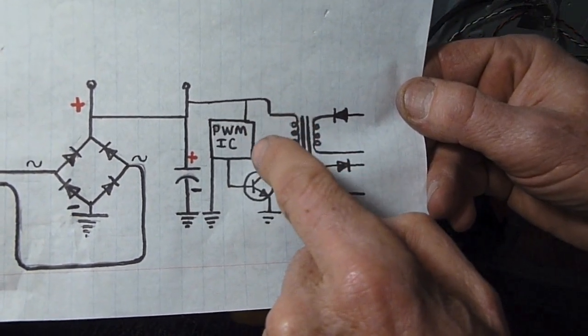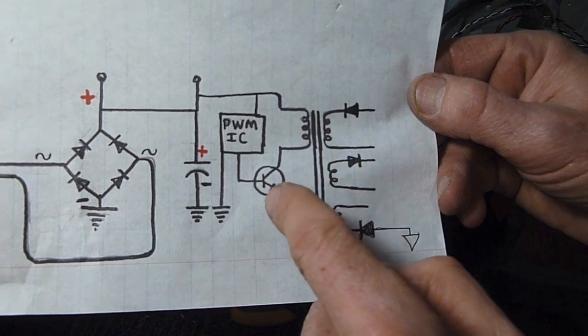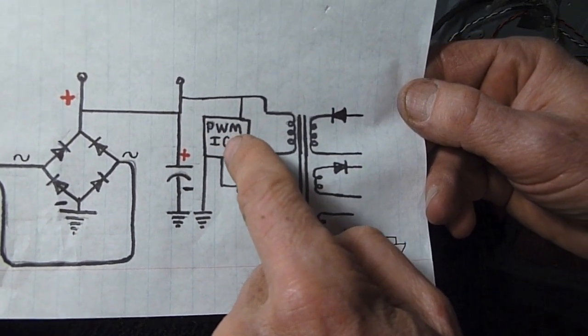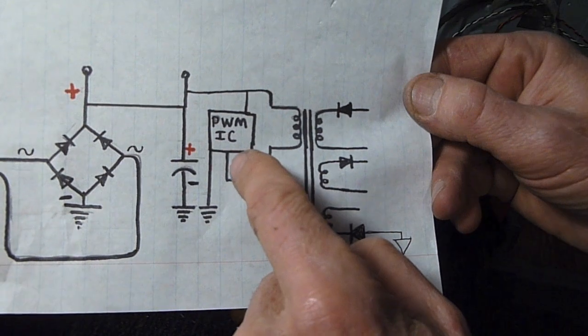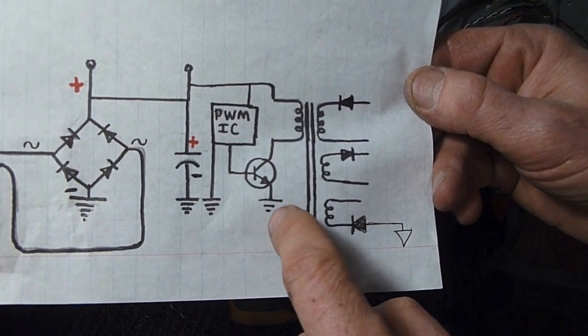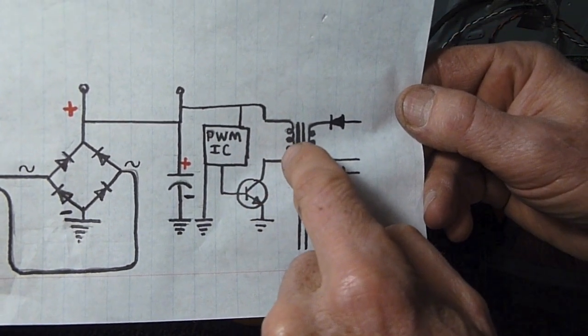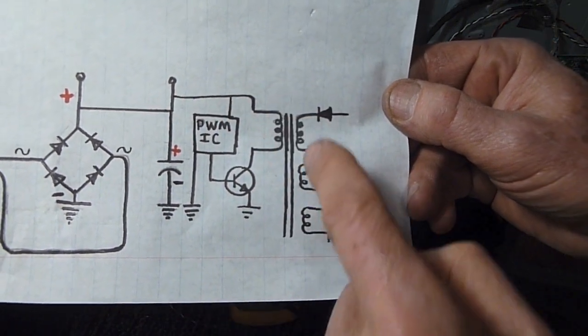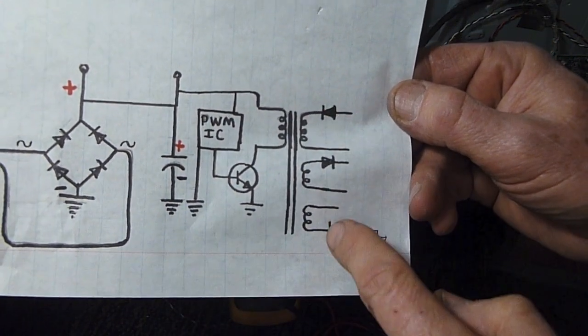Well, the transformer doesn't pass DC. It has to be pulsed DC or alternating current. So in this case, we've got this pulse width modulation IC that sends pulses to this transistor, allowing the ground to go up this way into the transformer. And the positive, of course, is already hooked to the transformer. So when you pulse it, then you can get an output on this side.